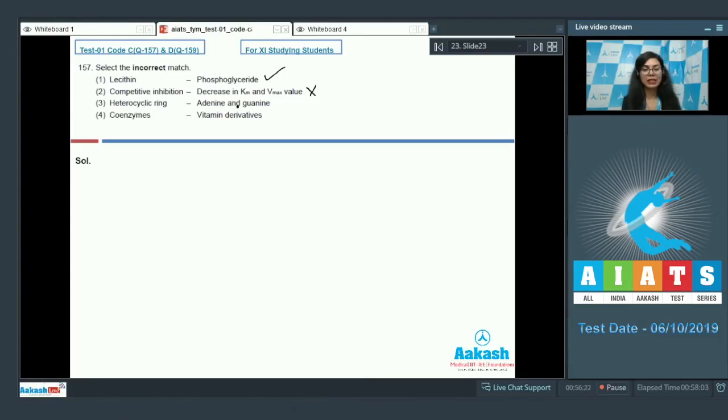Option three, heterocyclic rings: adenine and guanine. Yes, these are the rings made up of at least two different atoms, so they are called heterocyclic rings. And fourth option, coenzymes. We know that the essential components of many coenzymes are vitamins. So that is also correct. The correct answer here would be option two because that's incorrect. Answer is two.